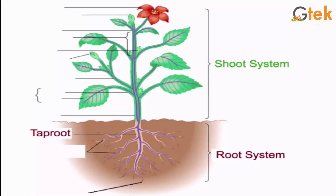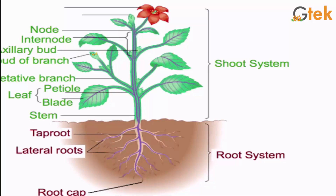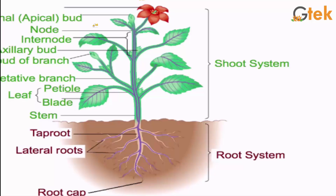Now we are going to see what parts the plant has. It has a root cap and lateral roots, and this portion is called stem. The plant has a leaf. It contains a petiole and blade which is represented here. This is blade and this portion is called petiole. You can see the bud of branch, which is going to be a flower, and this is an axillary bud leading to the bud of branch. This portion is internode and here the node is represented. This is the apical bud — the growth bud — and this is a flower.